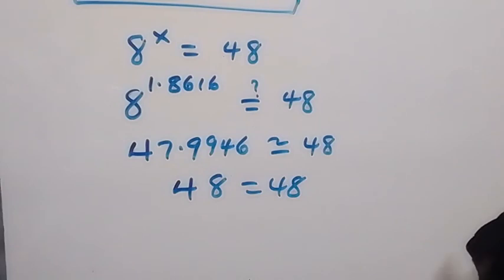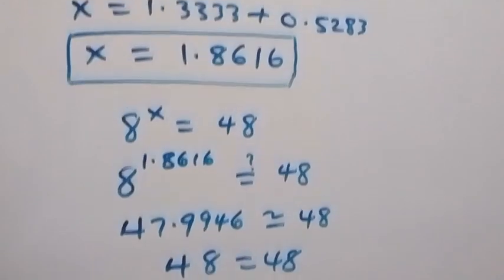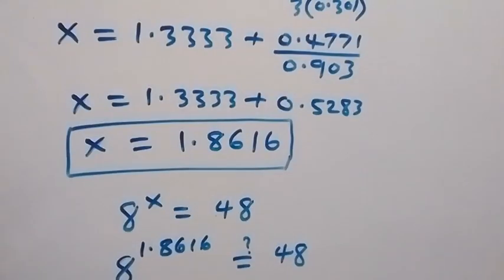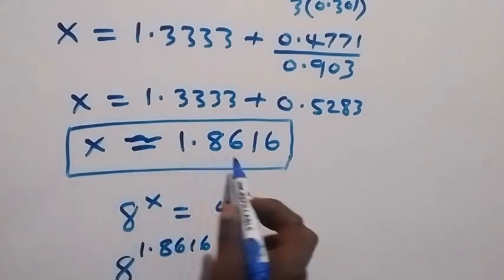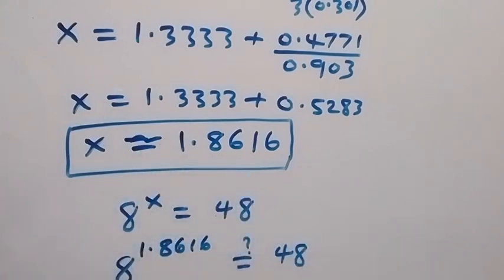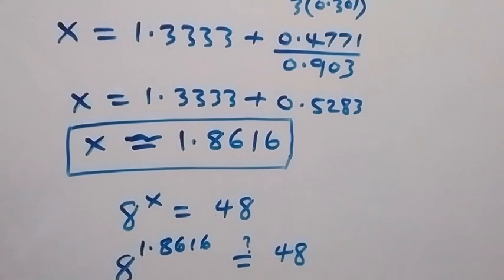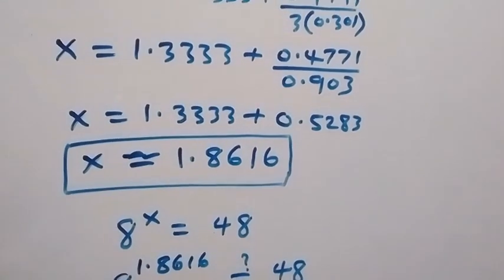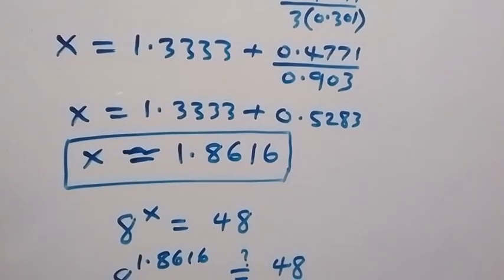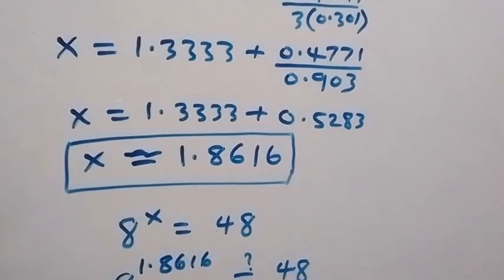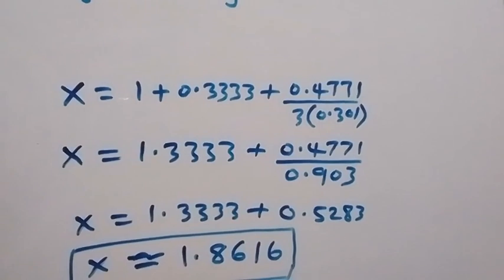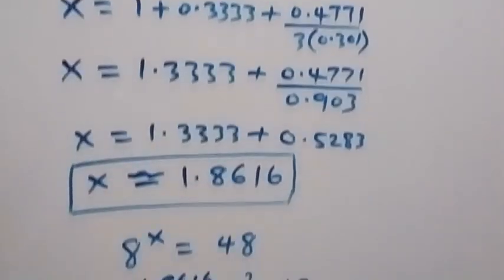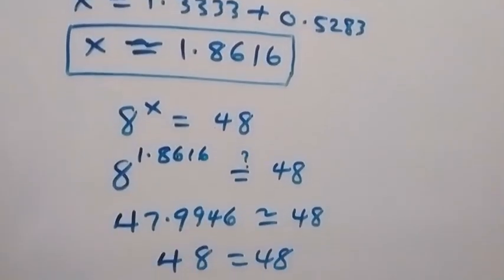The left hand side equals the right hand side, so we can conclude that the value of x is approximately 1.8616. Thank you for watching. Don't forget to subscribe for more exciting videos, turn the notification bell on, and share this video. See you in the next class, bye for now.